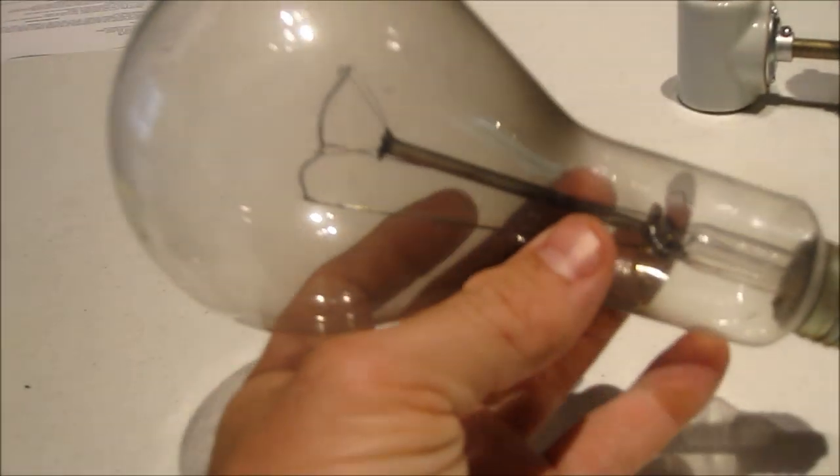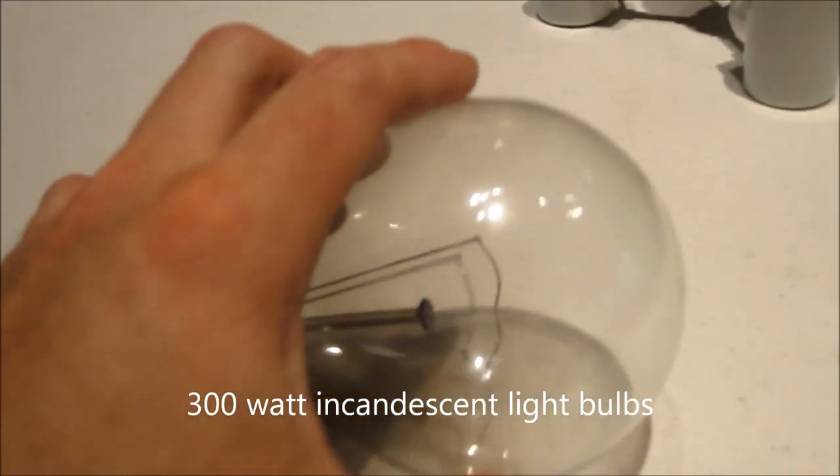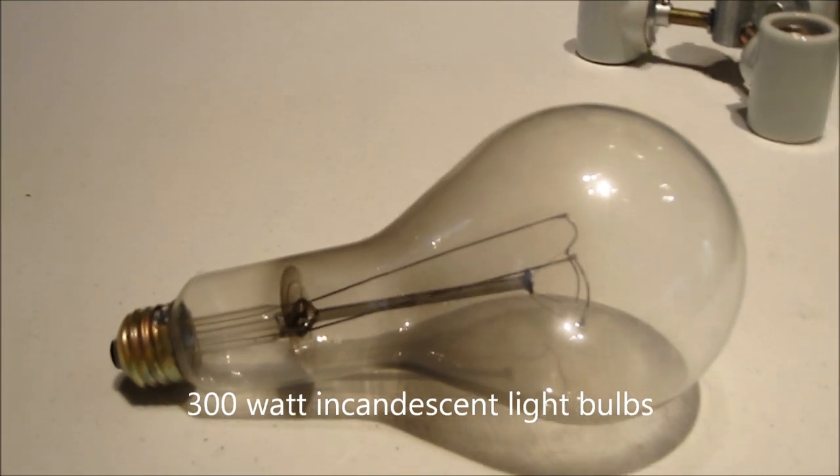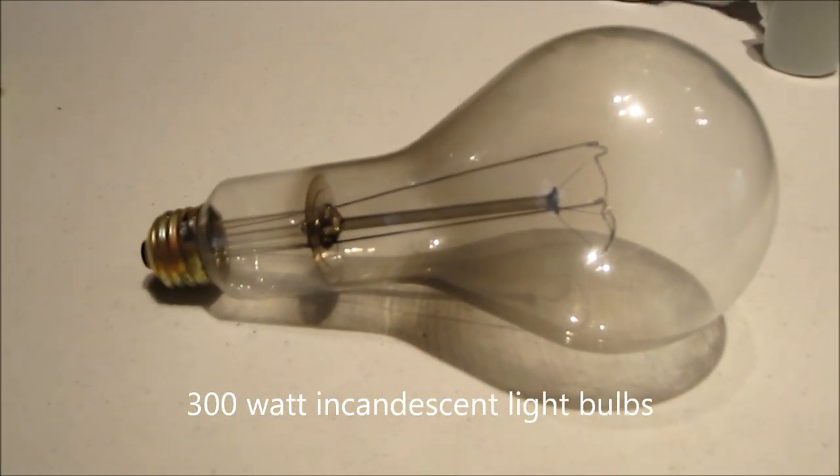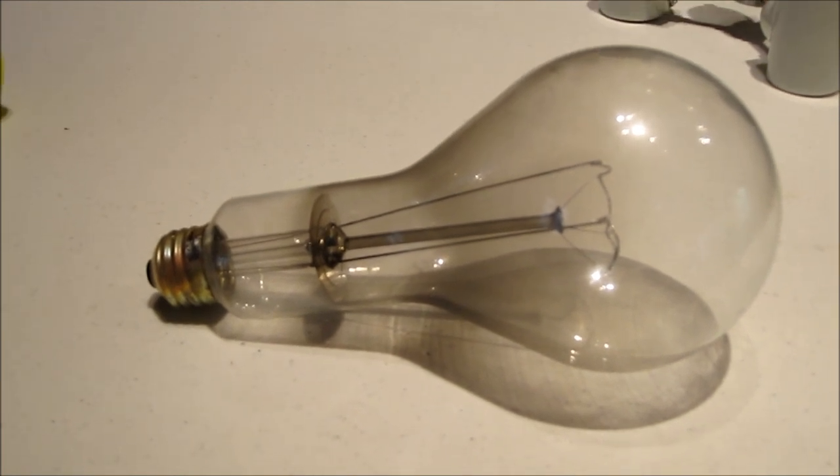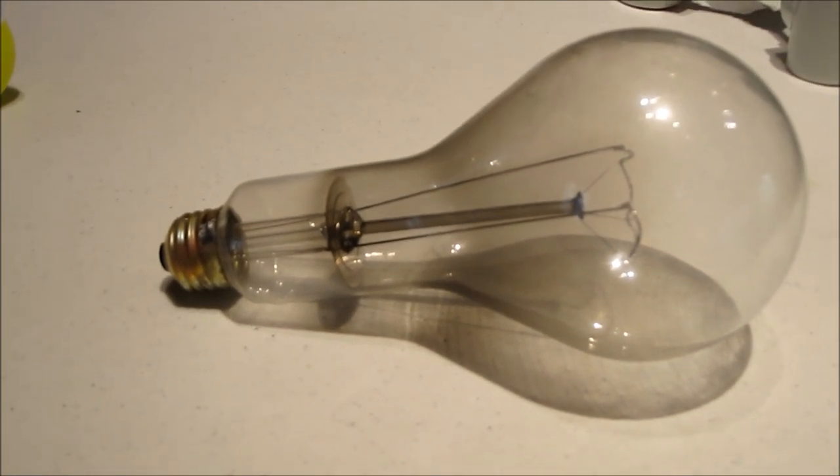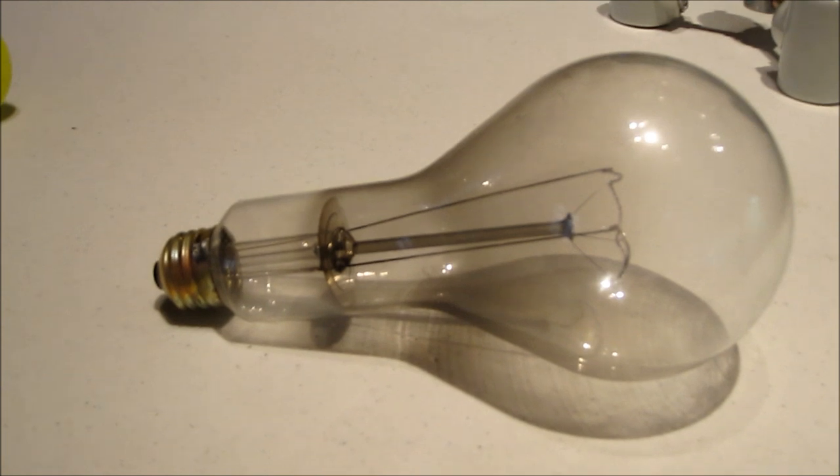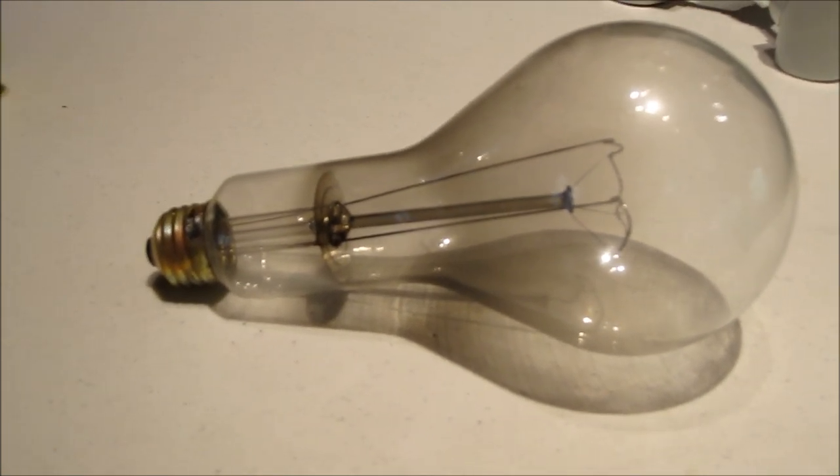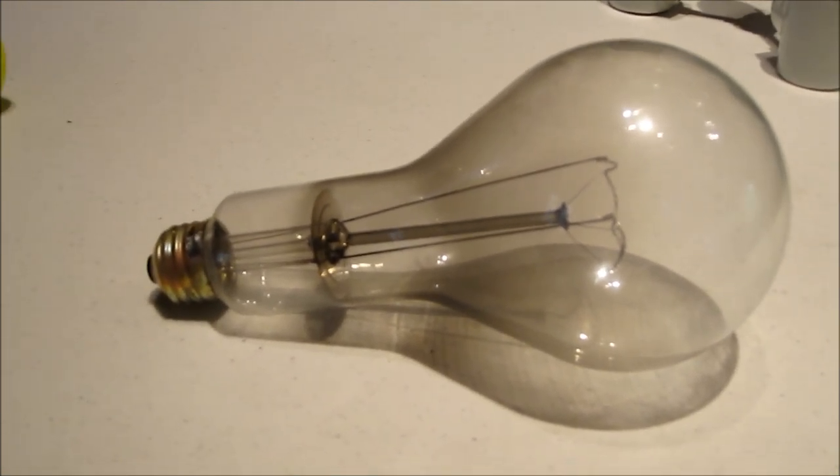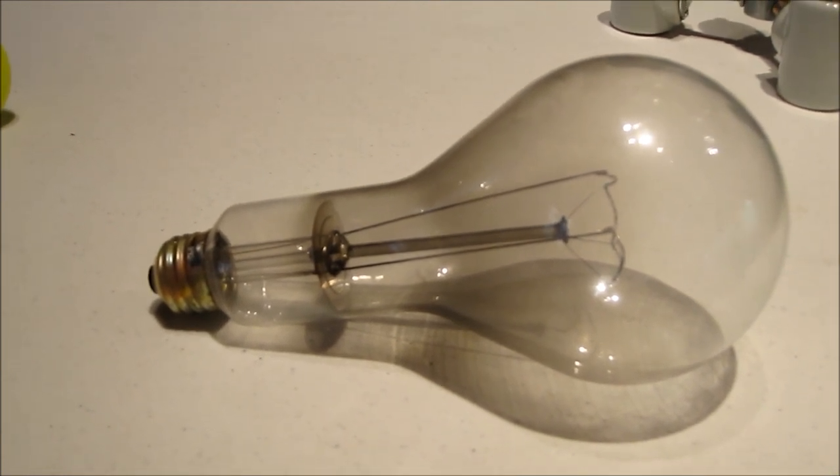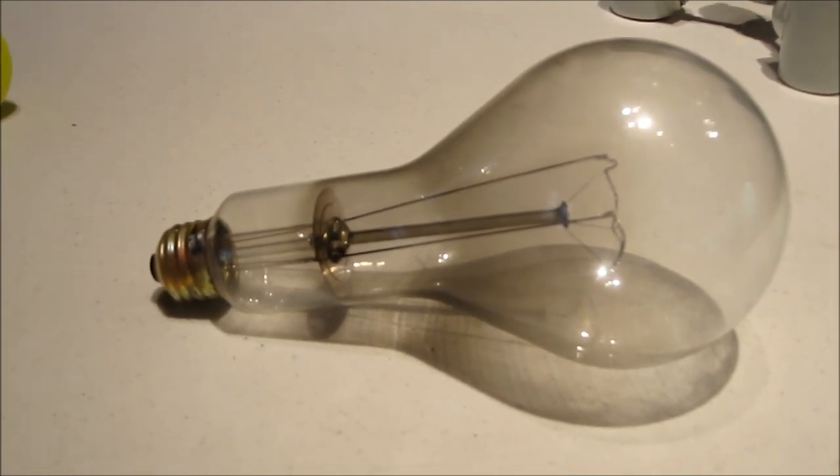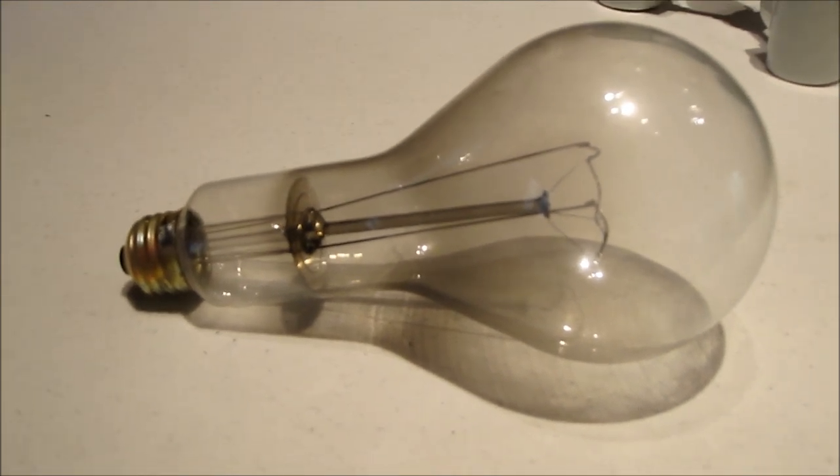We have these 300 watt incandescent bulbs on dimmers that we've struggled to find a solution for to replace. We've been looking online - they don't make a CFL that's dimmable in that size, and we really need at least 300 watts equivalent of light if not more because our sanctuary is not bright enough, particularly on a cloudy day, to read the hymnals and prayer book.